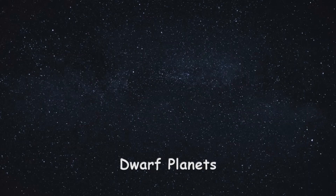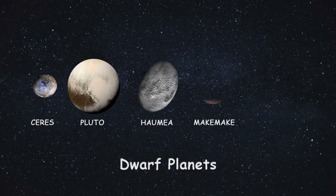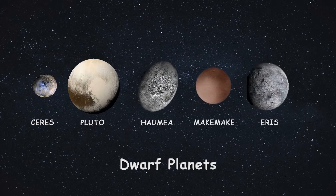There can be a lot of dwarf planets in the solar system, but we know very few of them. The known ones are Ceres, Pluto, Haumea, Makemake, and Eris. Pluto was once considered a planet, but after the concept of dwarf planets was developed, Pluto is now classified as a dwarf planet.